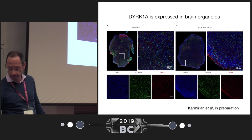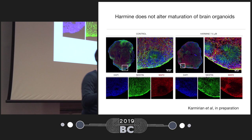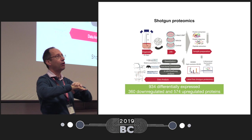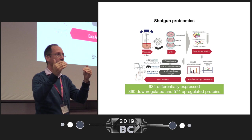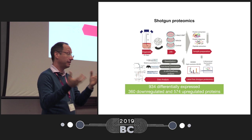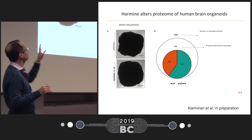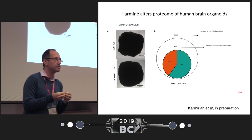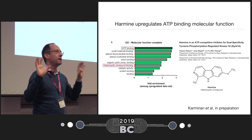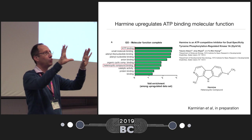We thought it would be interesting to examine what happens when harmine activates cells within brain organoids. First, we confirmed these cells in the brain organoids have DYRK1A — the green dots you can see in a section of the brain organoids are the DYRK1A marker. We then exposed the brain organoids to harmine, broke the whole tissue, and extracted all of the proteins to see which proteins were going up or down. Based on this kind of puzzle, we can infer what signaling pathways are being changed by harmine. We found that harmine is able to alter the expression of 155 proteins.